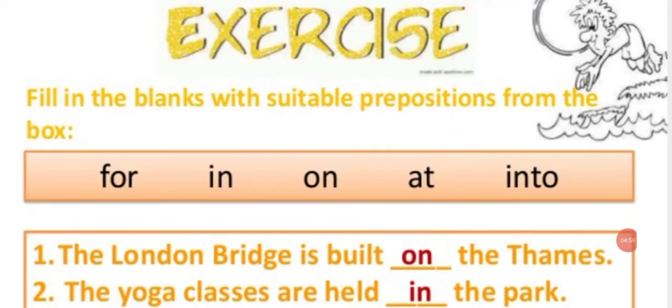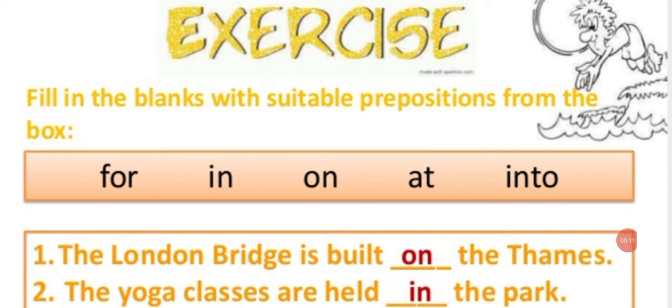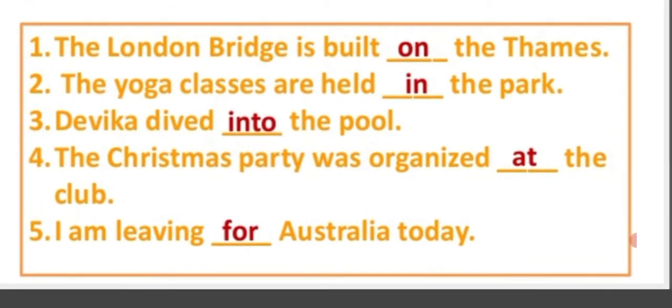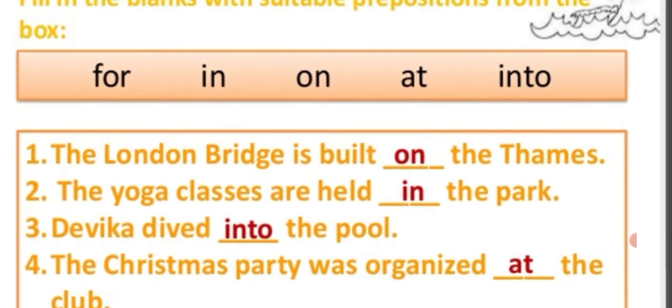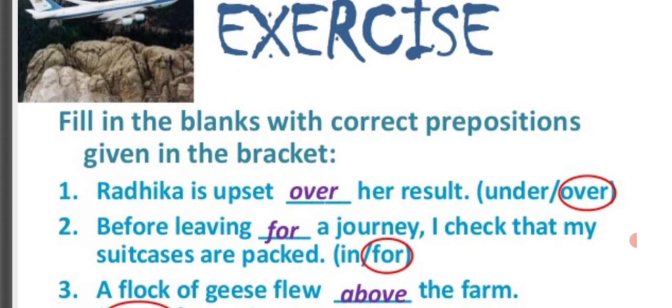Now let's do an exercise. Fill in the blanks with suitable prepositions from the box — options are: for, in, on, at, into. Sentence 1: The Lantern Bridge is built on the Thames. Sentence 2: The yoga classes are held in the park. Sentence 3: Devika dived into the pool. Sentence 4: The Christmas party was organized at the club. Sentence 5: I'm leaving for Australia today.